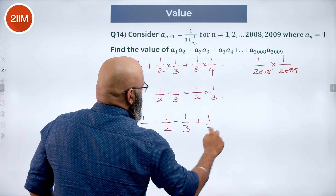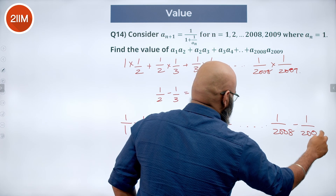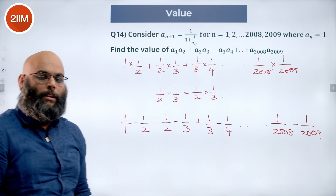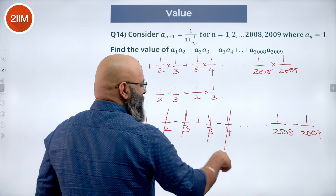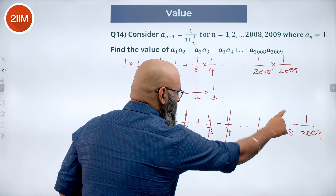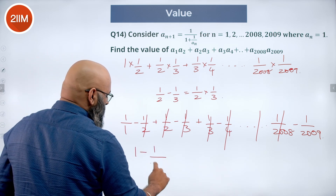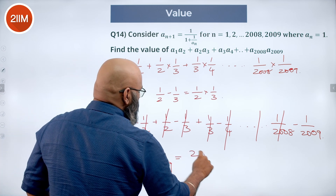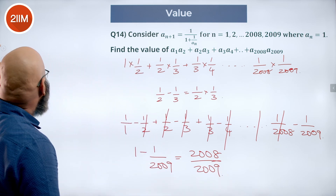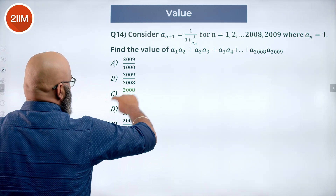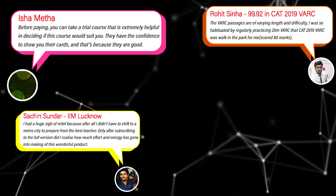Continuing: ... + (1/2008 − 1/2009). All intermediate terms cancel: −1/2 + 1/2, −1/3 + 1/3, and so on, up to −1/2008 + 1/2008. We are left with 1 − 1/2009 = 2008/2009. The answer is 2008/2009 — a simple but effective approach.